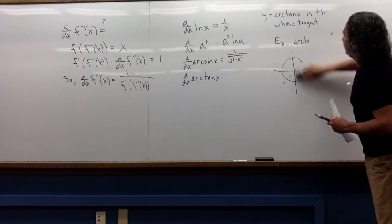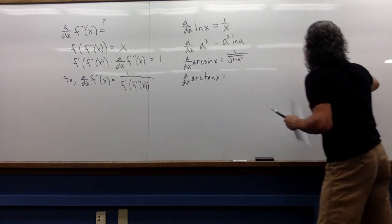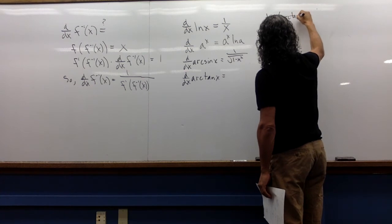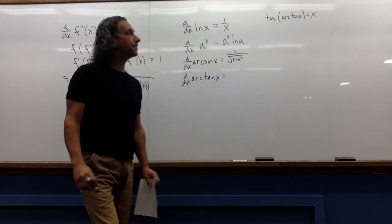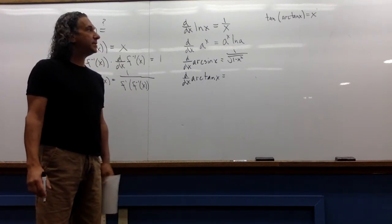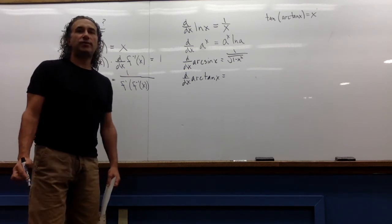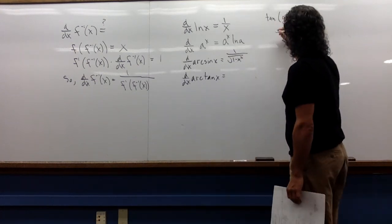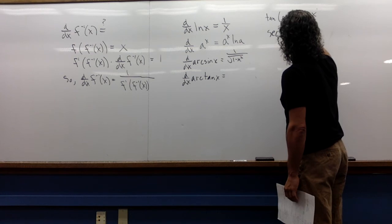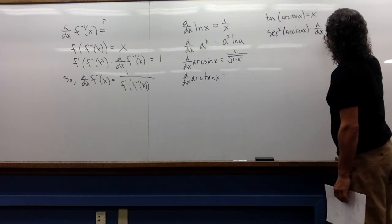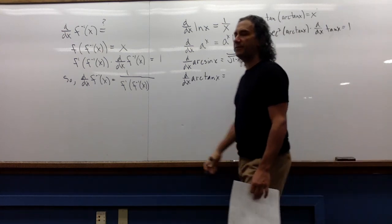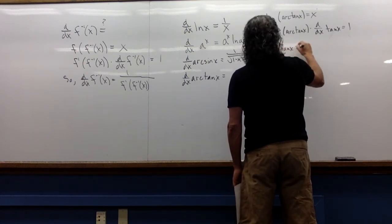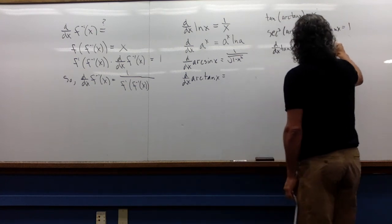Let's derive the derivative of arc tangent in a similar manner. We know that tangent composed with arc tangent is x, since those are inverses. The derivative of tangent of stuff is secant squared of stuff times the derivative of that stuff, and the derivative of x is 1. So the derivative of arc tangent is 1 over secant squared of arc tangent of x.